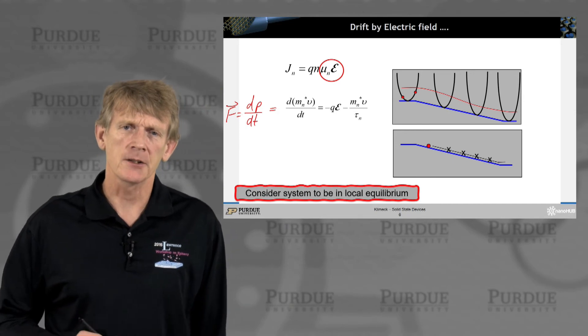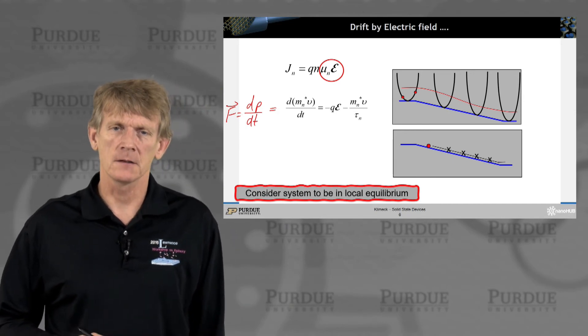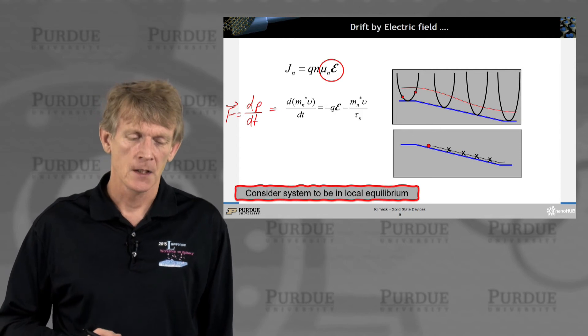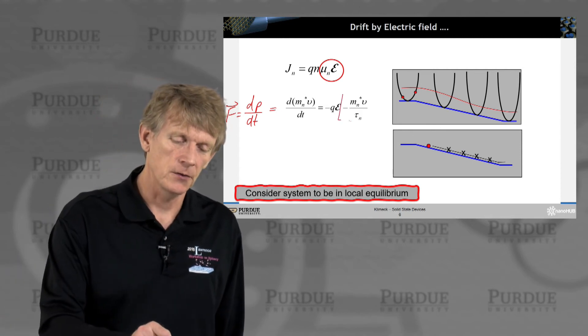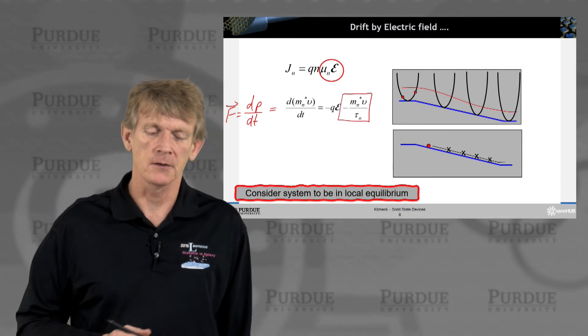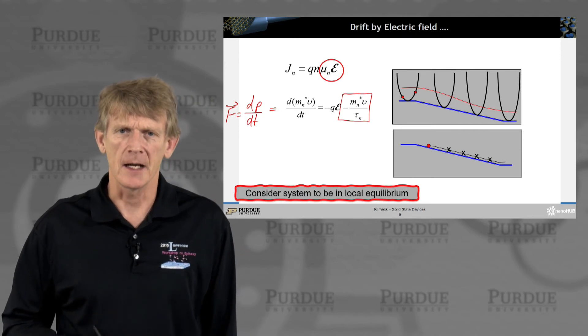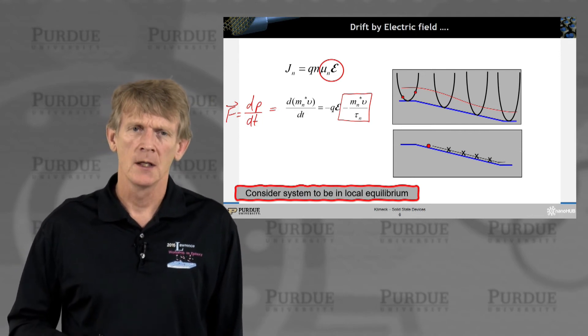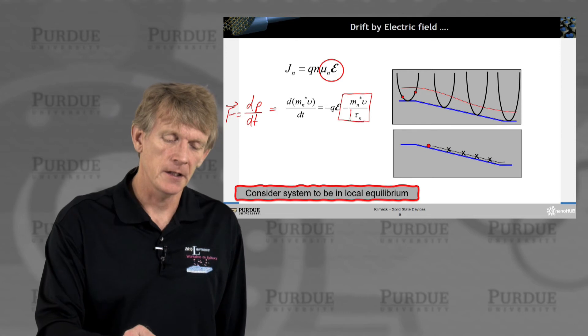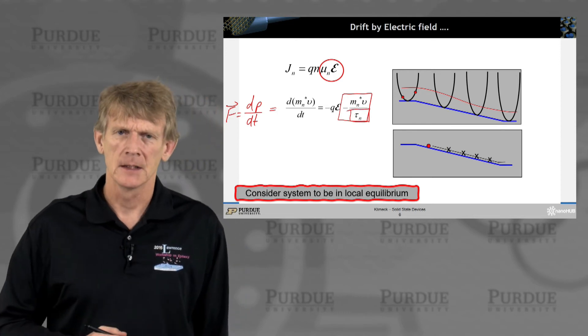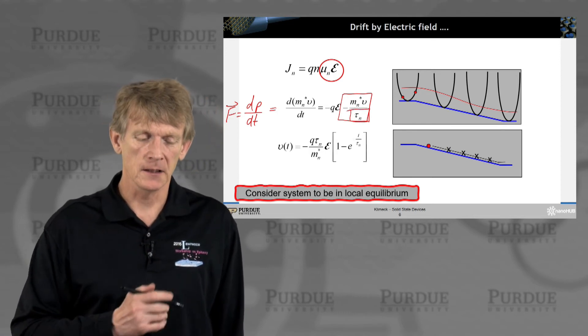So the electron, by its charge, is dragged in the other direction of the electric field. And we have a loss term, a decay term, where the electron velocity is damped. So this is a damping term. And we have this here with a minority carrier lifetime.